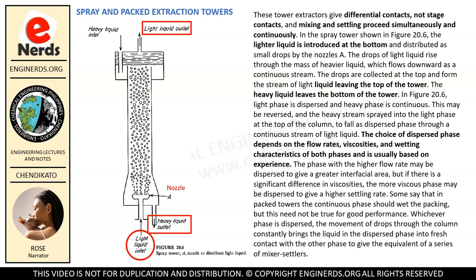This may be reversed, with the heavy stream sprayed into the light phase at the top of the column to fall as dispersed phase through a continuous stream of light liquid. The choice of dispersed phase depends on the flow rates, viscosities, and wetting characteristics of both phases and is usually based on experience. The phase with the higher flow rate may be dispersed to give a greater interfacial area, but if there is a significant difference in viscosities, the more viscous phase may be dispersed to give a higher settling rate. Some say that in packed towers the continuous phase should wet the packing, but this need not be true for good performance. Whichever phase is dispersed, the movement of drops through the column brings the liquid in the dispersed phase into fresh contact with the other phase, giving the equivalent of a series of mixer settlers.